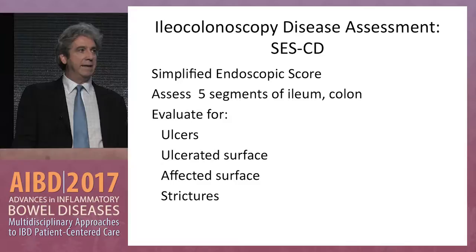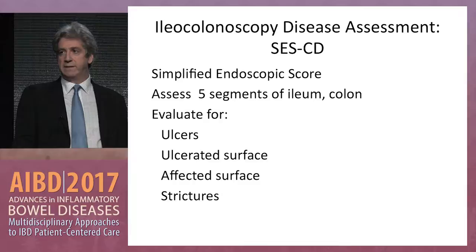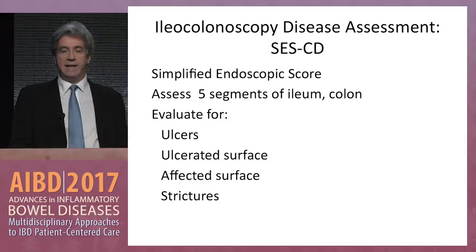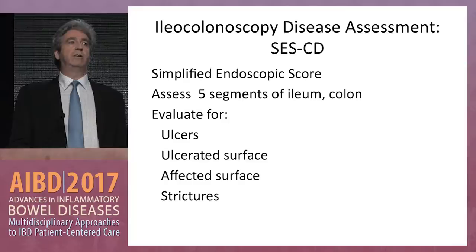Here we're talking about what can be reached during a colonoscopy, namely the ileum, and then four additional segments through the colon: ascending, transverse, descending, and rectum, and compiling the score that includes ulcers, percentage of the circumference that has an ulcerated surface, affected surface, and strictures.